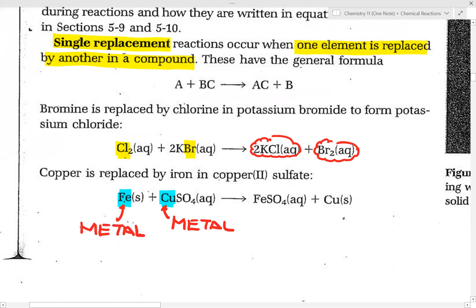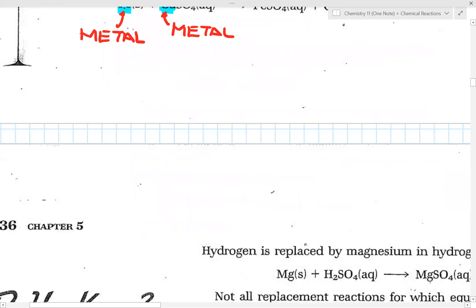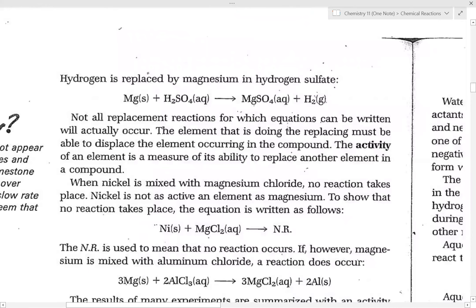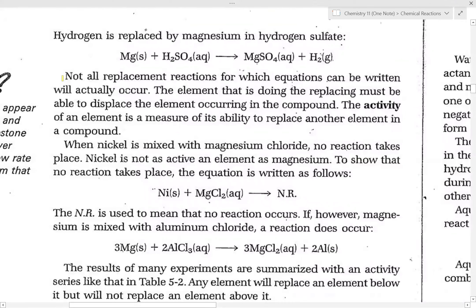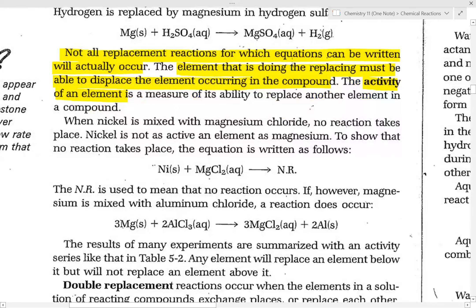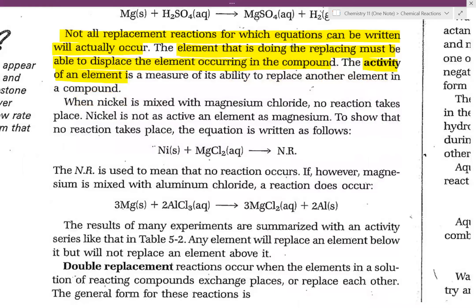Now, that you learned back in grade 10, not a big deal. But if you read on, one thing that I would like you to highlight is the fact here. It says, in this case, not all replacement reactions for which equations can be written will actually occur. However, the element that is doing the replacing must be able to displace the element occurring in the compound. Now, and this ability is called the activity of the element.